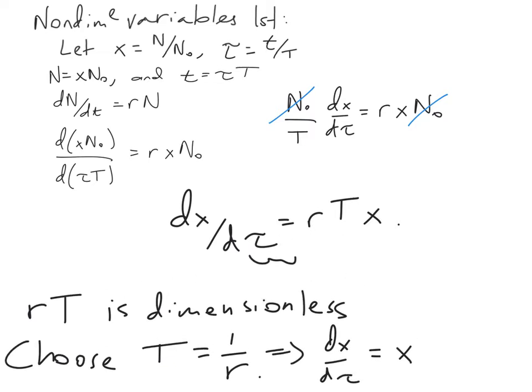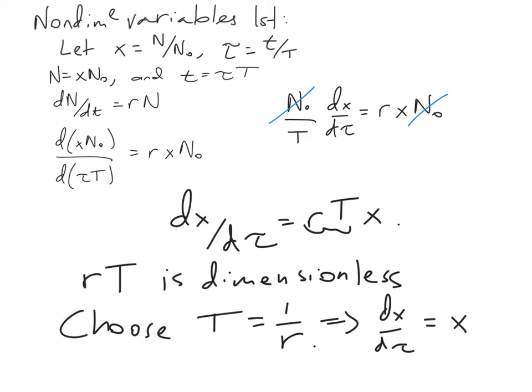What does this mean? It means that whatever the role of this r was, it's just a scaling factor, and we were able to get rid of it by choosing a different scaling of our variables.